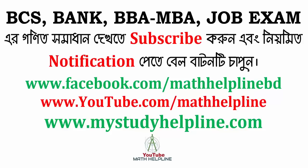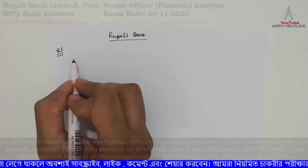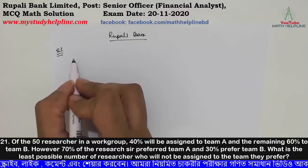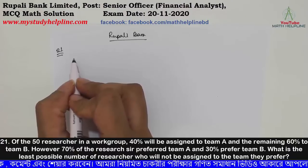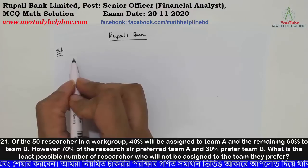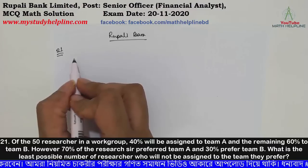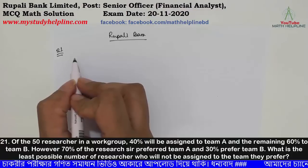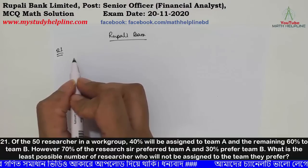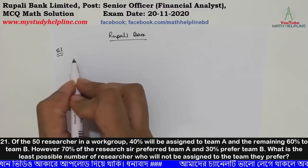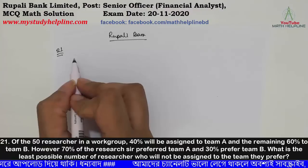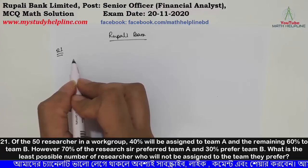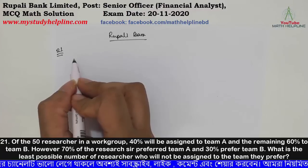Question: Of the 50 researchers in a workshop, 40 percent will be assigned to team A and the remaining 60 percent to team B. However, 70 percent of the researchers prefer team A and 30 percent prefer team B. What is the least possible number of researchers who will not be assigned to the team they preferred?